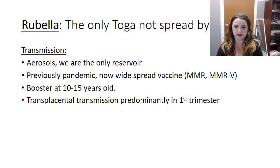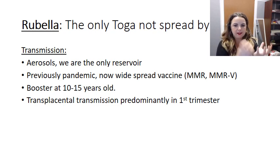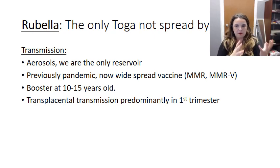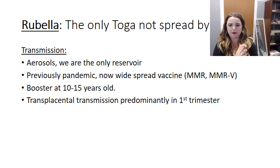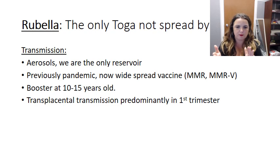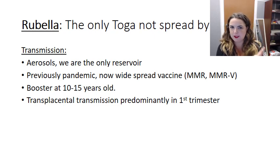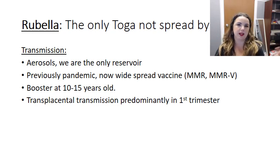But who rubella is really a big deal for are pregnant women and their babies. It can spread transplacentally from mother to fetus, and while the mother is viremic, the incidence of congenital infection is dependent on the month of gestation and decreases significantly after the fifth month. Within the first trimester, months one through three account for about 18% of congenital infections. By month four, it's about 6%. Month five is less than 2%, and after the fifth month we don't really see transplacental infection.